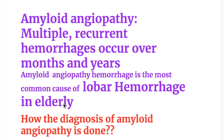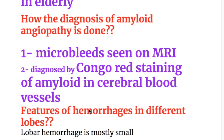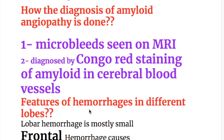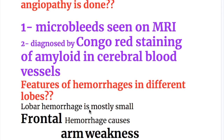In amyloid angiopathy, there are multiple recurrent hemorrhages occurring over months and years. It is the most common cause of lobar hemorrhages in the elderly. Diagnosis is made by: number one, microbleeds seen on MRI; and number two, Congo red staining of amyloid in cerebral blood vessels.